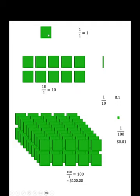Let's call this green block 1 whole. 1 over 1 is 1. 10 over 1 is 10. It's actually 100 times as big as 1 tenth, or 0.1.